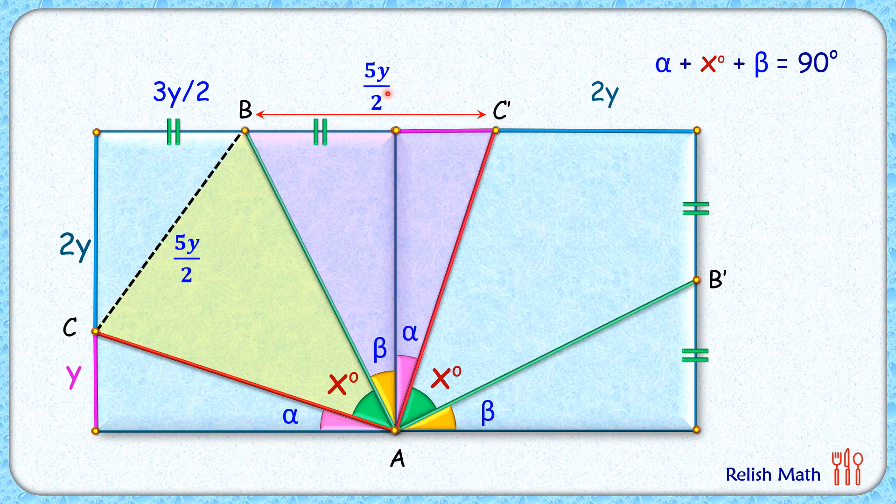As the triangles are congruent, corresponding parts will be equal. Here we can say that x degrees equals alpha plus beta.